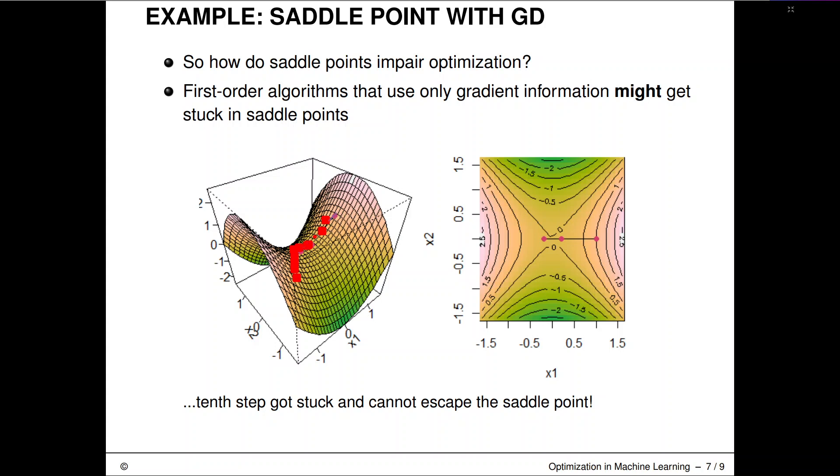Sometimes, due to numerical inaccuracies and step size control, we might not directly converge to it. But we will have very slow crawling behavior around the saddle point before we hopefully potentially escape it.